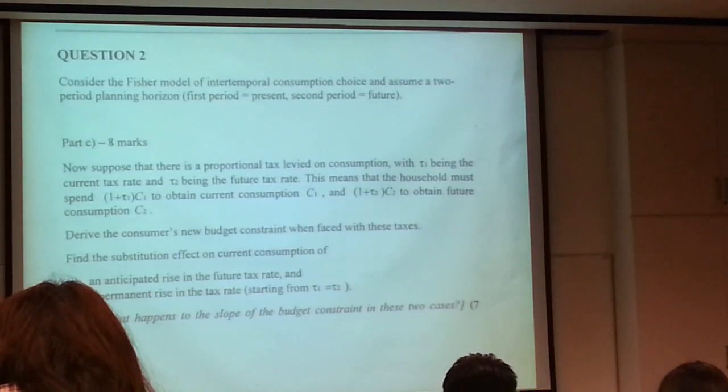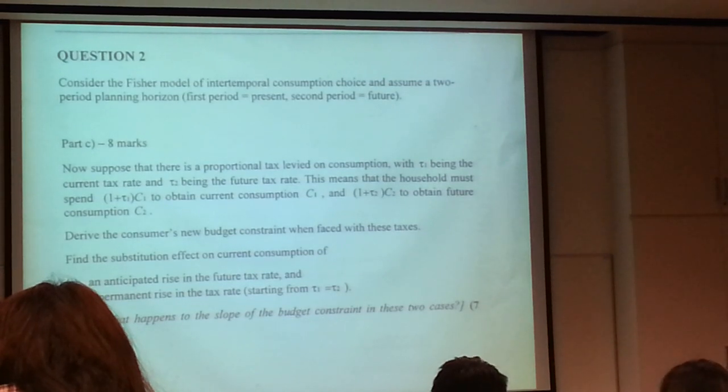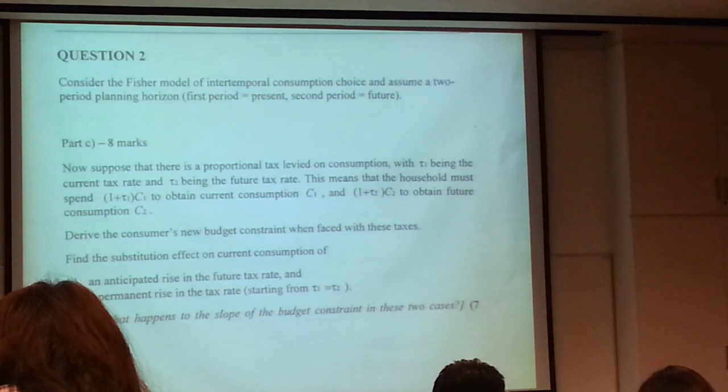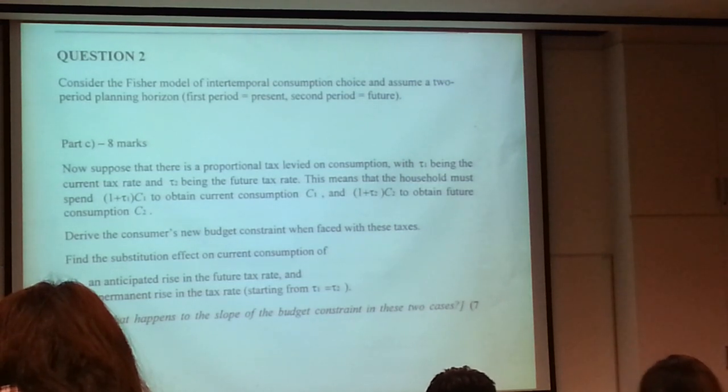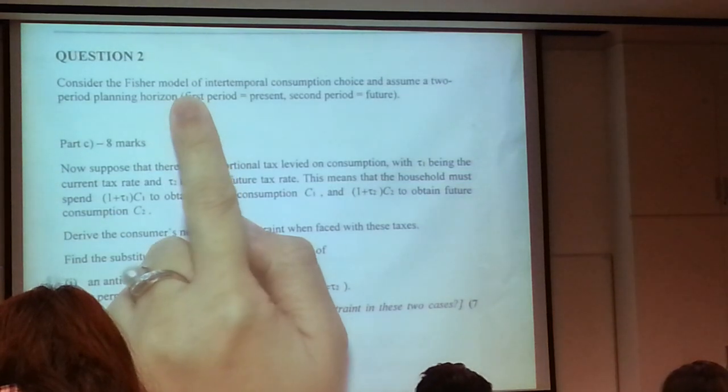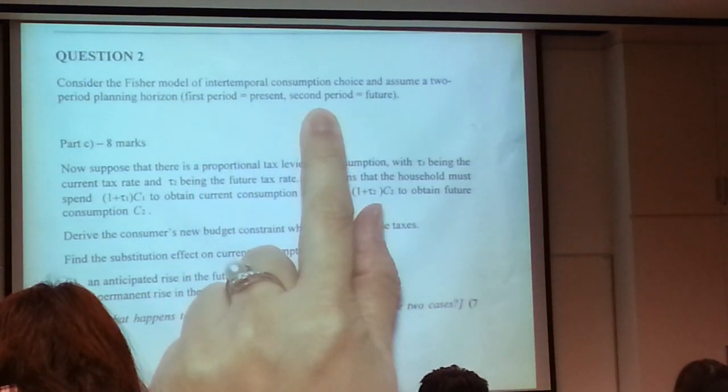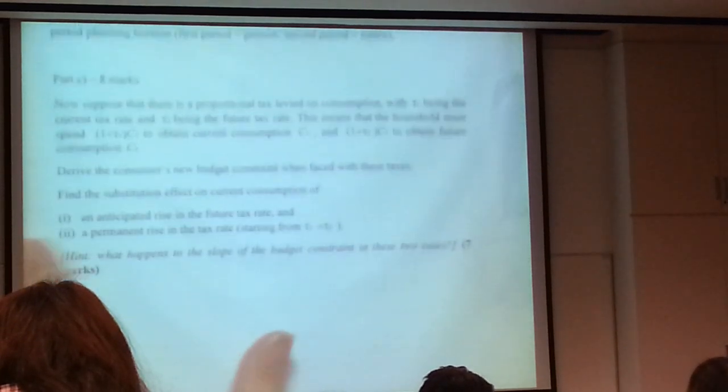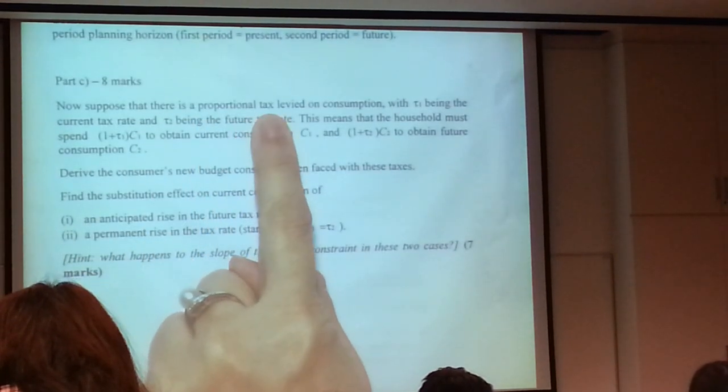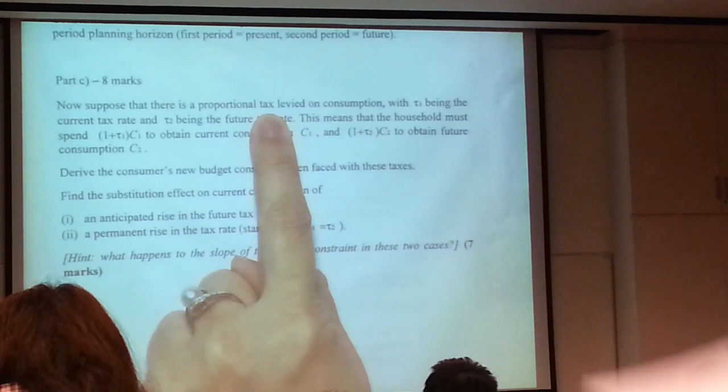About 7 to 8 months. The standard IBC we had was no taxes. Remember we had Y1, Y2, C1, C2. Now let's look at question 2C. So they told you Fisherian model again, period 1, period 2. But now, there is a proportional tax levied on consumption.